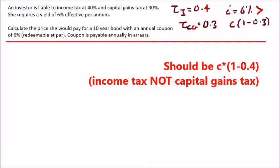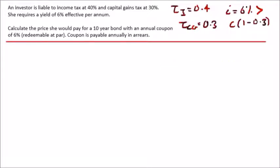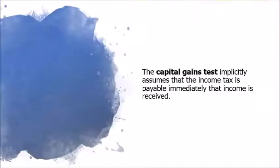If this is greater, it means the price she pays for the bond would be worth it and she would make a profit, making this an excellent investment opportunity. Calculate the price she would pay for a 10-year bond with an annual coupon of 6%. Clearly, if the coupon is 6%, then 6 times any factor less than one will be less than 6%, so there's going to be a capital gain. The capital gains test implicitly assumes that income tax is payable immediately when income is received, so yes we're going to apply it.